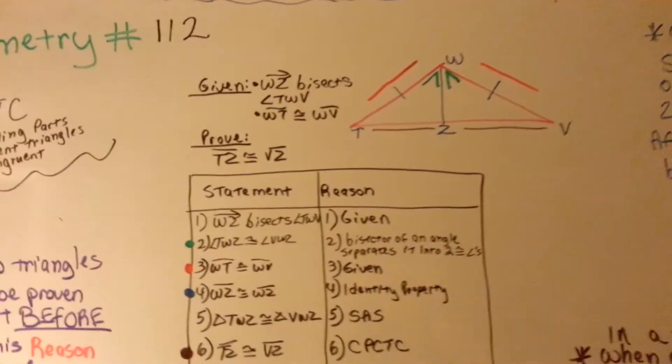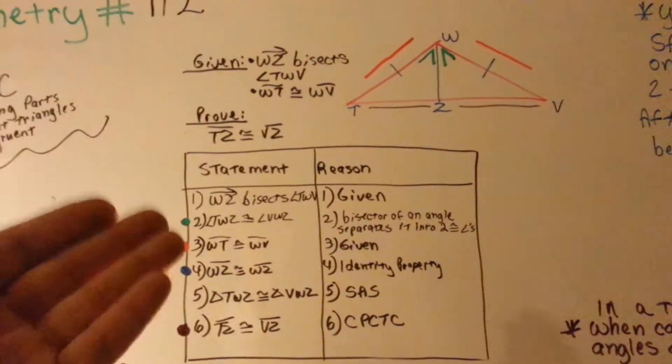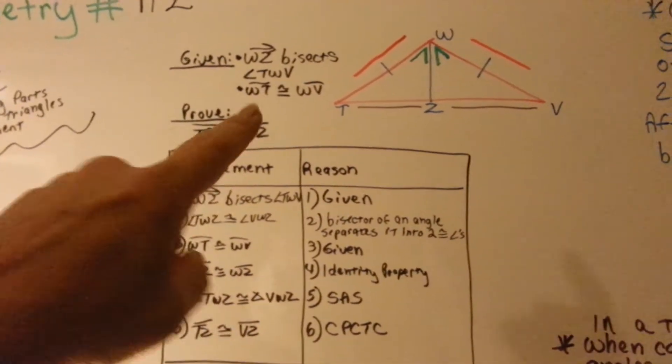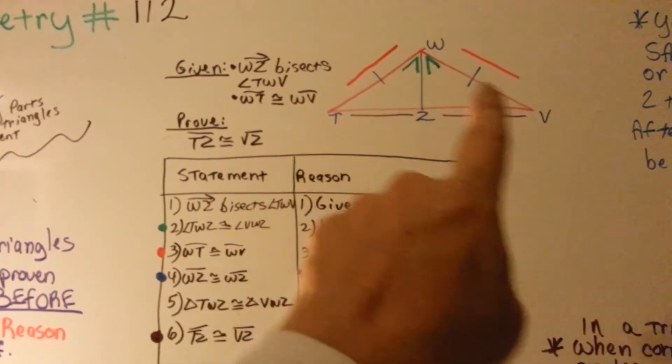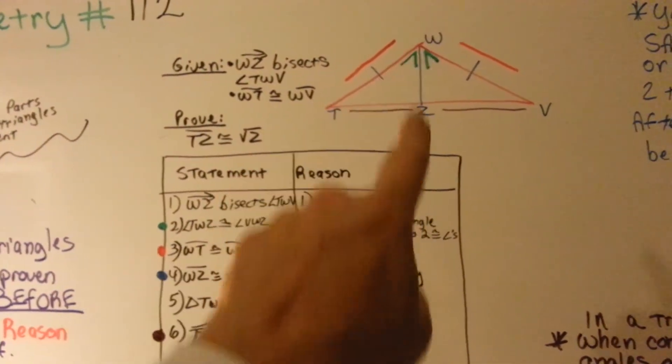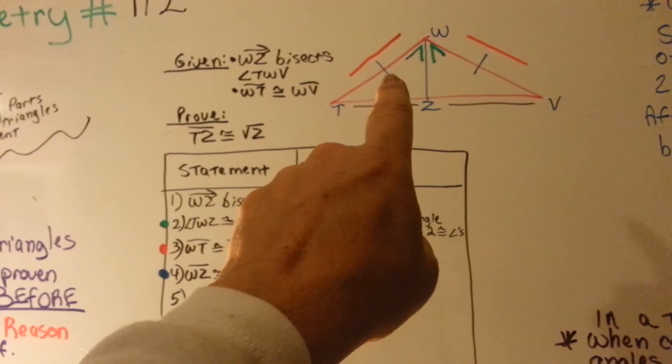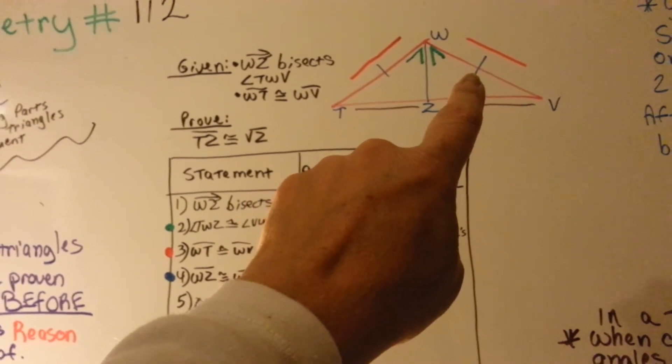So let's take a look at this quick little proof that I did. It's a little mini proof that I drew up really quick. We've got one triangle that is bisected at WZ.